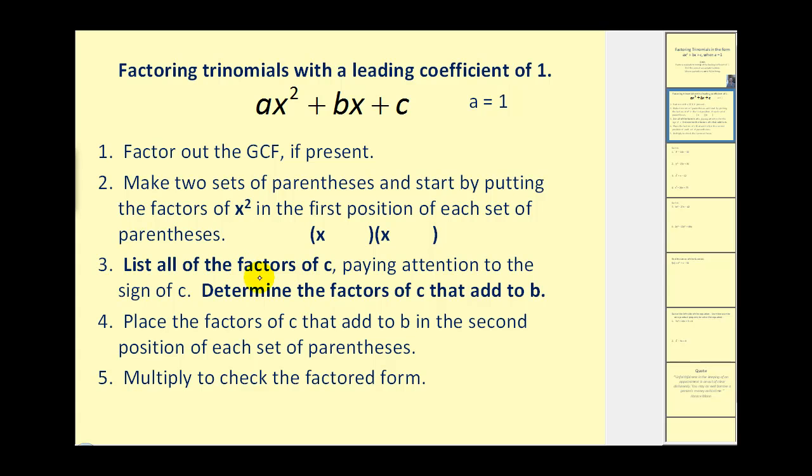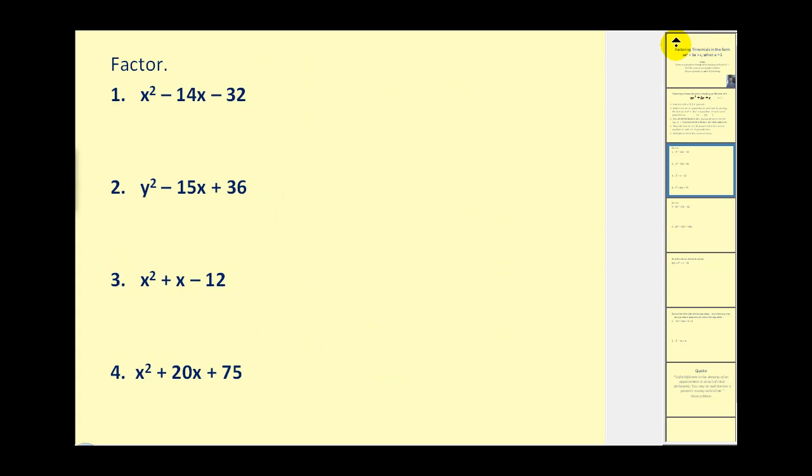Step three, we'll list all of the factors of c, the constant term, paying close attention to the sign. Our main goal is to determine the factors of c that add to b, the coefficient of the x term. Once we find those factors, we'll place those in the second position of each set of parentheses, which should result in the two factors of the quadratic. And then step five, we can multiply to check the factored form. Let's go ahead and give it a try.